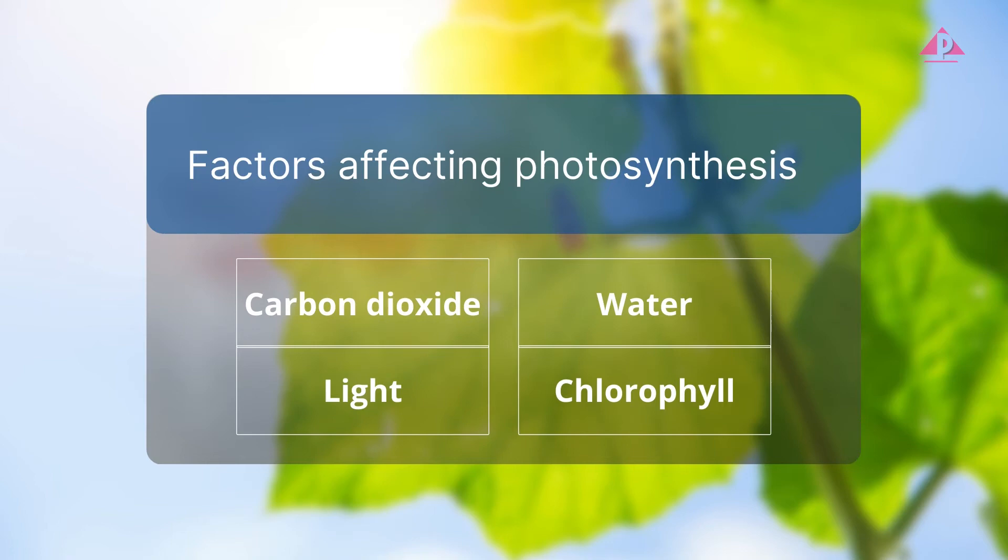When considering control variables, we need to think about factors that affect photosynthesis. Apart from carbon dioxide, light also plays an important role for plants to carry out photosynthesis.